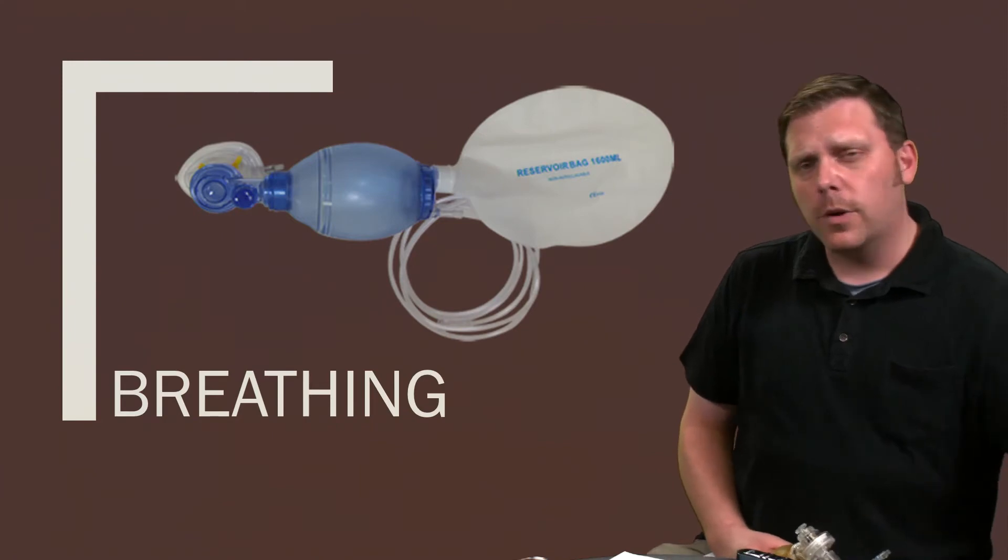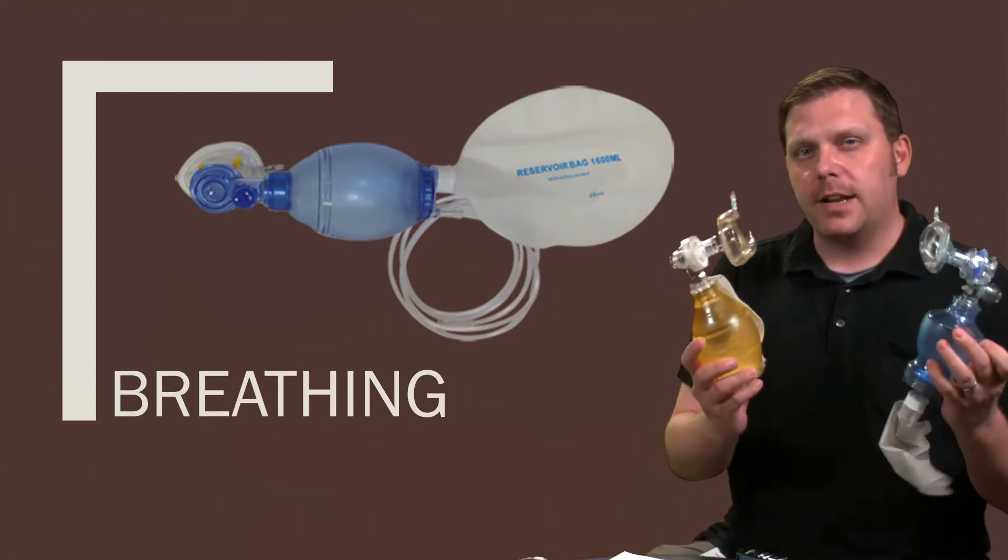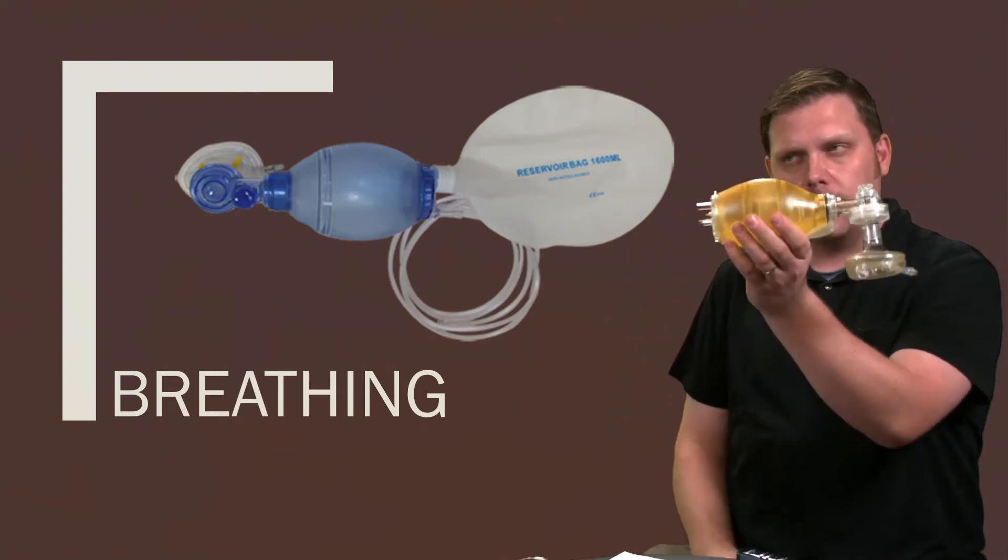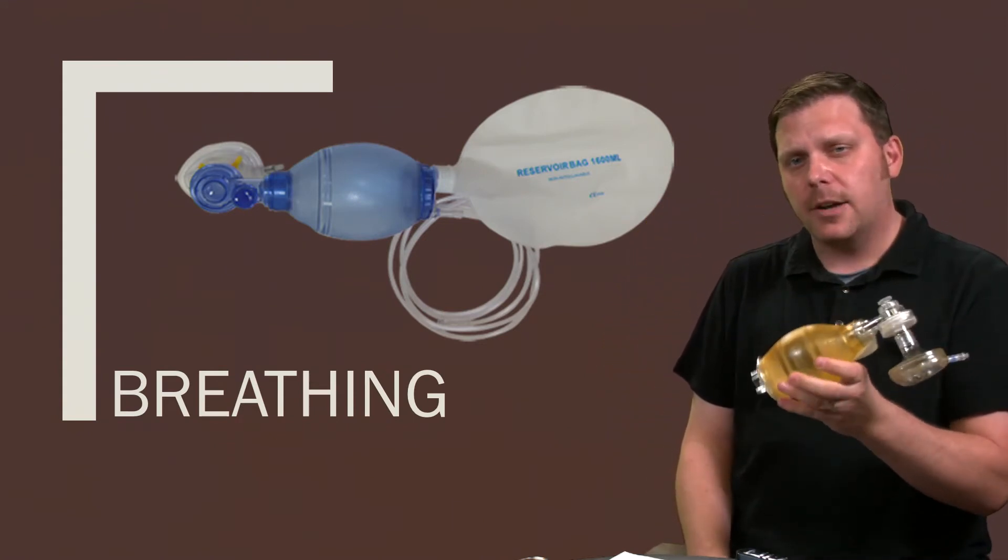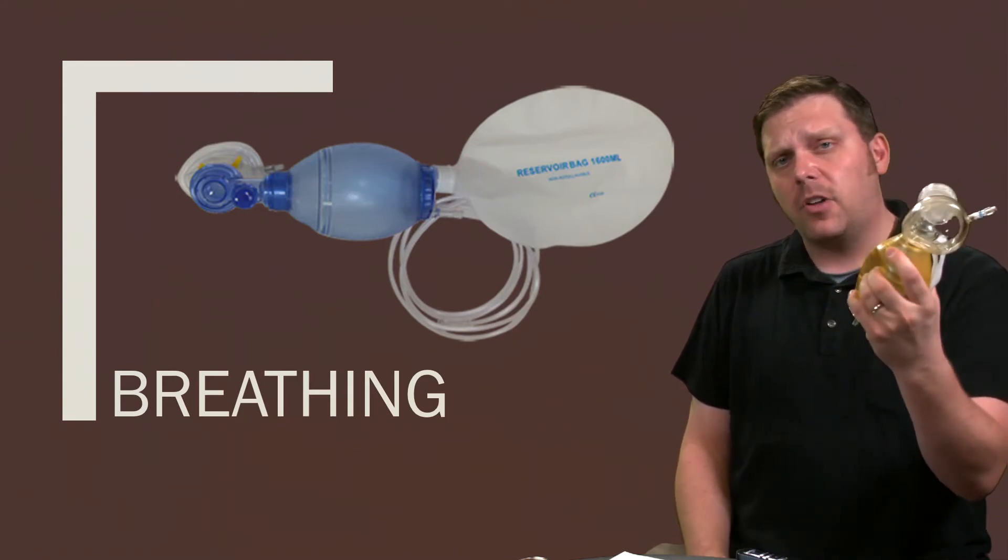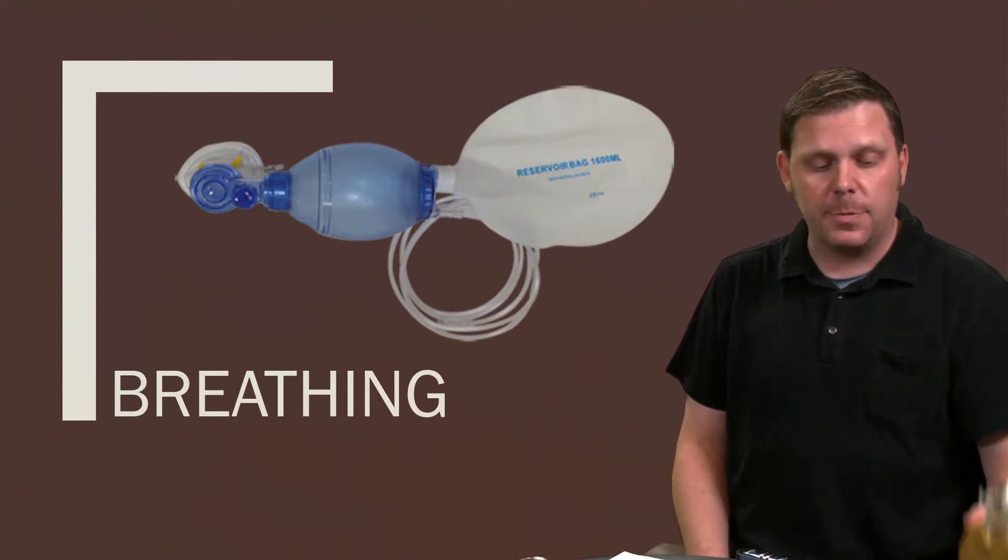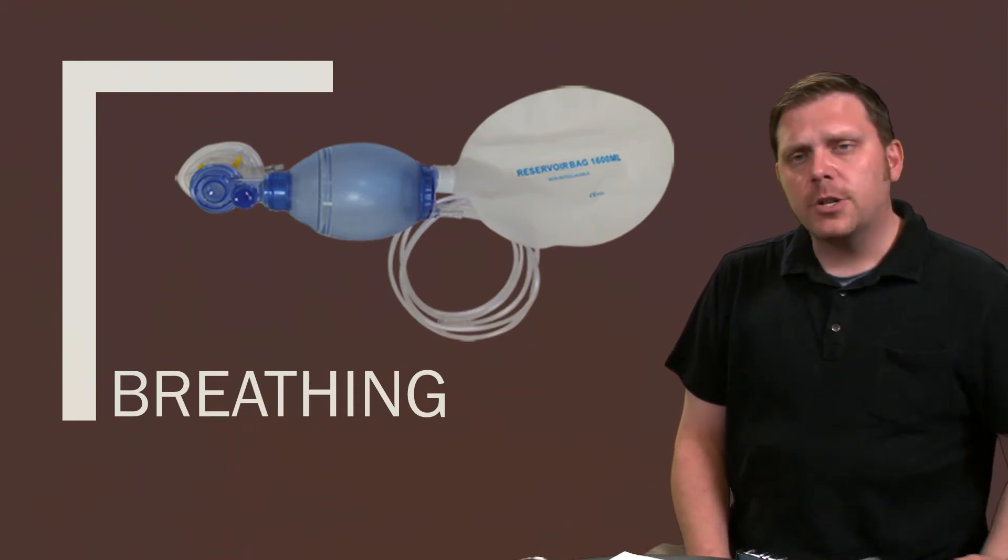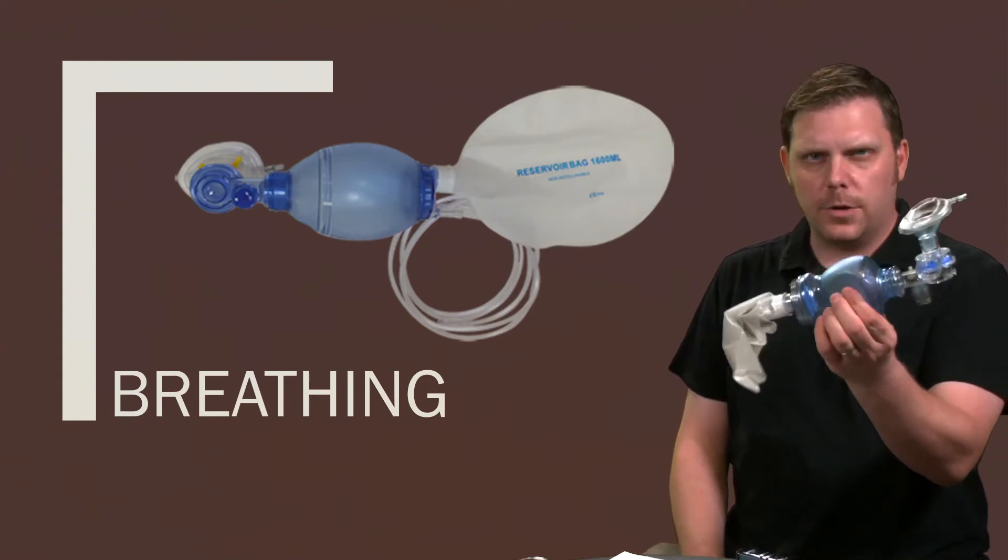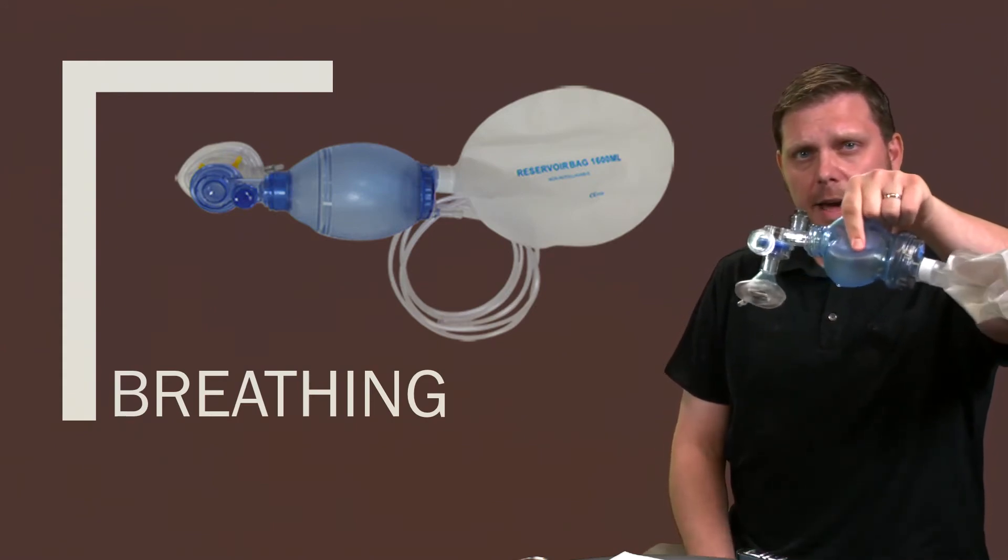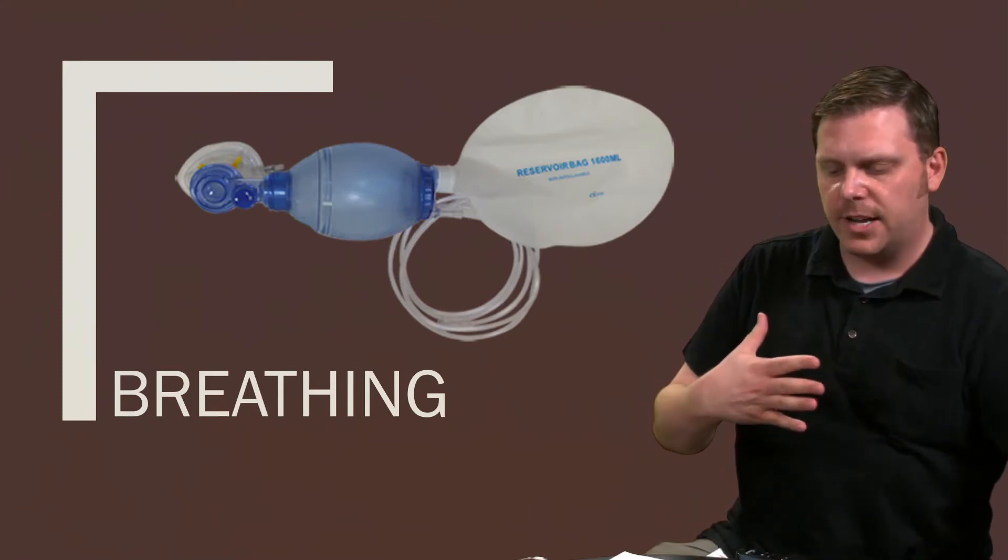What really matters at this point is having the right size BVM. It's very easy to give every pediatric patient too much air with a pediatric bag. The tidal volume in this far surpasses our average pediatric patient. So if you see too much chest rise with it, if you see too much coming out, you might need to go to a smaller size or just make sure that you're only using two fingers on the bag only until you have that chest rise.